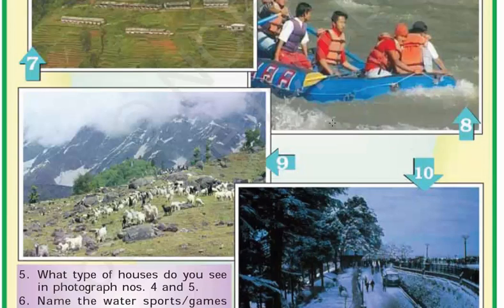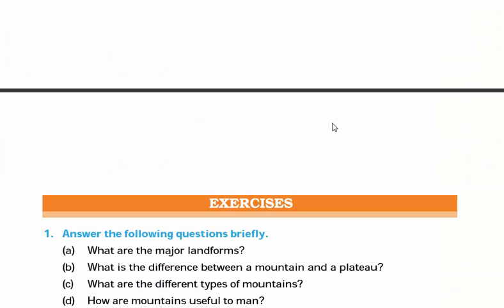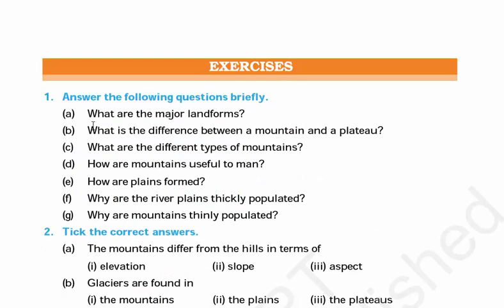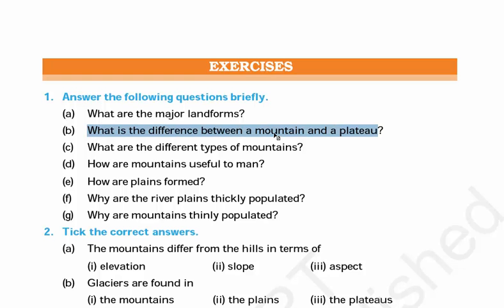We have finished our chapter. Let's do some exercises. First question: What are the major landforms? The major landforms are mountains, plains, and plateaus. Second question: What is the difference between a mountain and a plateau? A mountain is a natural elevation of the Earth's surface and there are different kinds of mountains — block mountain, fold mountain, and volcanic mountain.